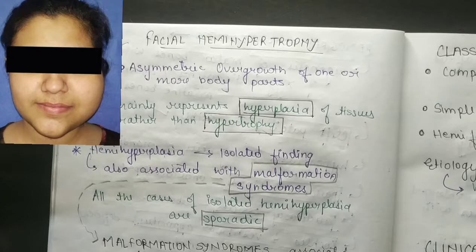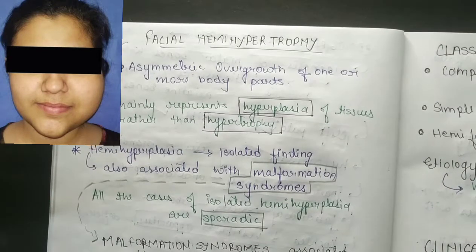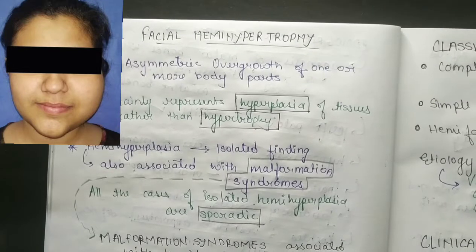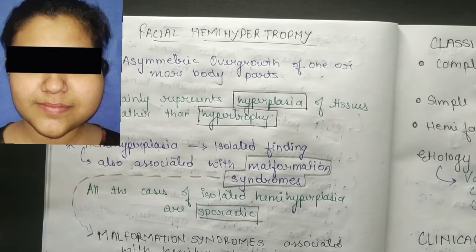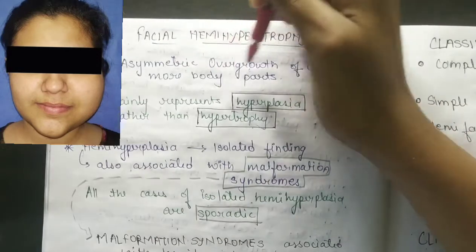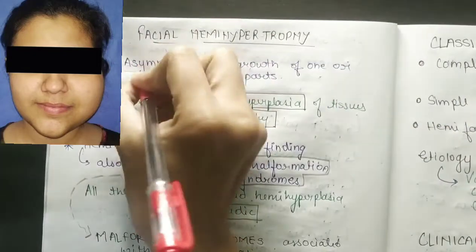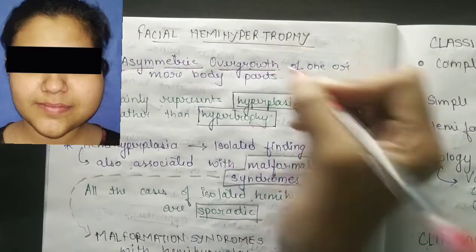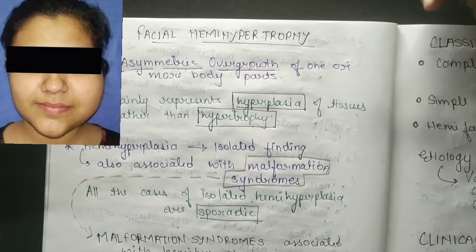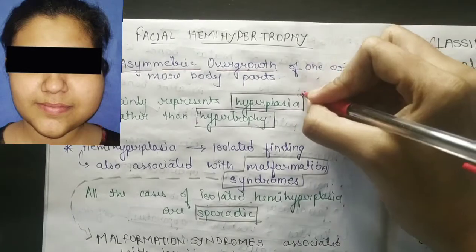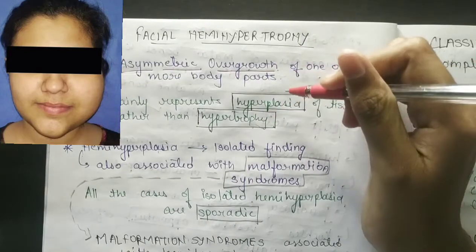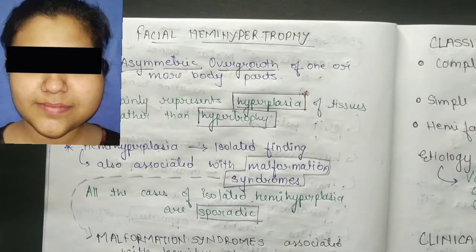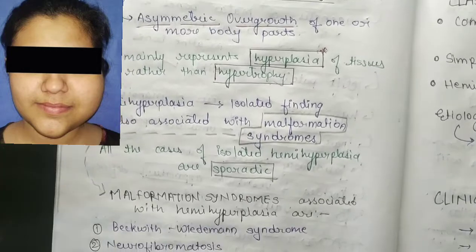Welcome to SAME - Study Art Motivation and Education. In this video we are going to discuss facial hemihypertrophy. Facial hemihypertrophy is an asymmetric overgrowth of one or more body parts. It mainly represents hyperplasia of the tissues rather than hypertrophy.